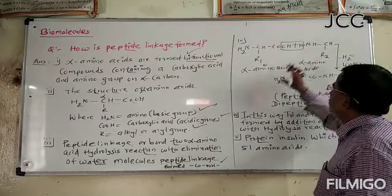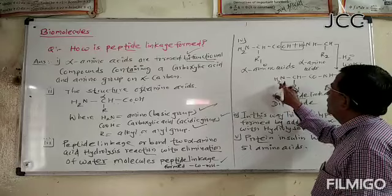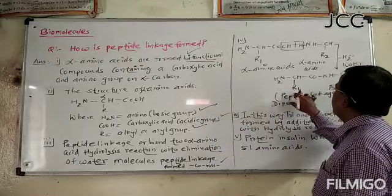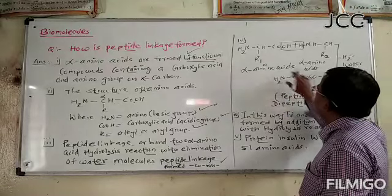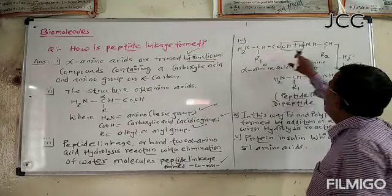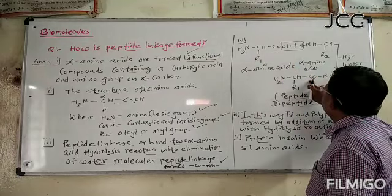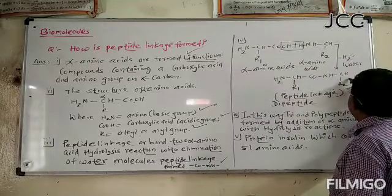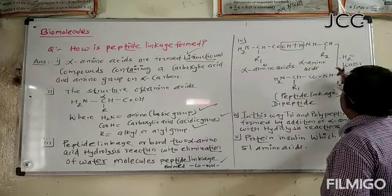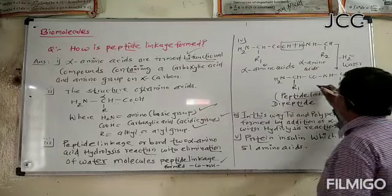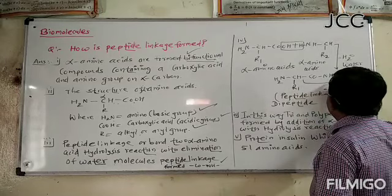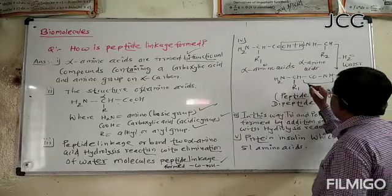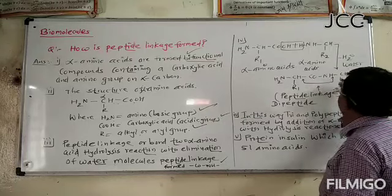The product formed by joining two amino acids is: NH2 single bond CH single bond R1 single bond CO, single bond NH, single bond CH single bond R2. This linkage is called the peptide linkage. We have the two amino acid residues R1 and R2 joined by this peptide linkage.